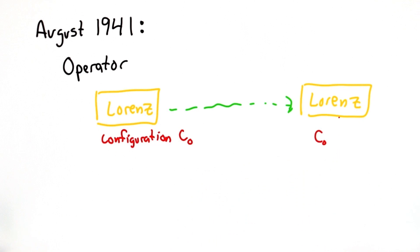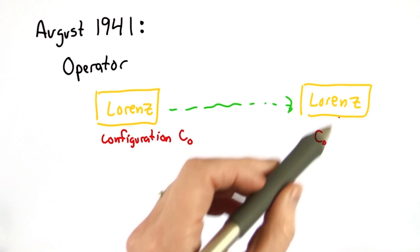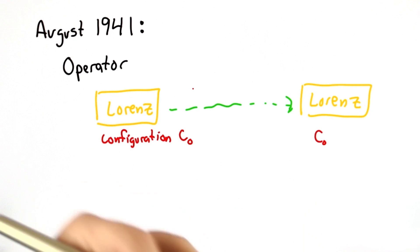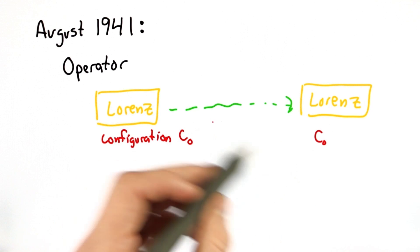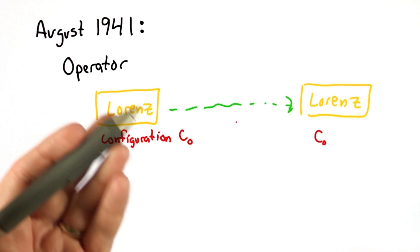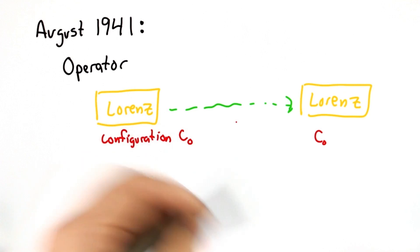The recipients at the other end needed to know what the configuration for that day was. But these could be distributed securely and were much smaller than needing to distribute the whole key sequence. Once you had the starting configuration, you could transmit an arbitrarily large message if this assumption that the key was completely unpredictable was true.